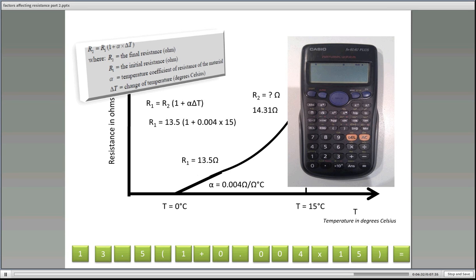Now if you have problems with your calculator doing that I'll show you another way of doing it. If we work this part out first 0.004 times 15 that gets us 0.06 then we add the 1 that gives us 1.06 and now we multiply the 13.5 to that. So 13.5 times 1.06 will give us 14.31 ohms.